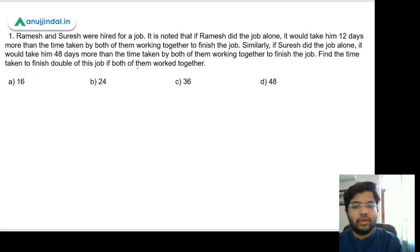Similarly, if Suresh did the job alone, it would take him 48 days more than the time taken by both of them working together to finish the job. Find the time taken to finish double of the job if both of them work together.